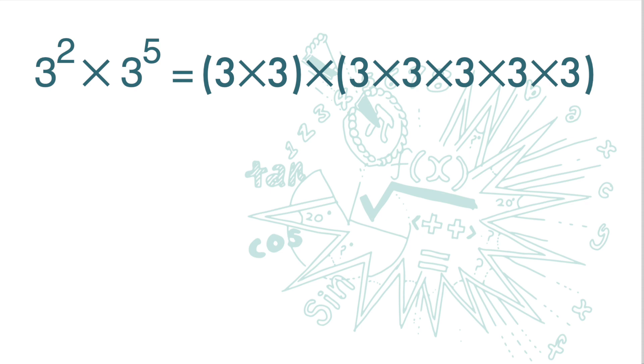So here we have 3 multiplied by itself 7 times, there are 7 threes altogether. So it is 3 to the power of 7. And this is actually equal to the sum of the indices here. So 3 to the power of 2 times 3 to the power of 5 is the same as 3 to the power of 2 plus 5.